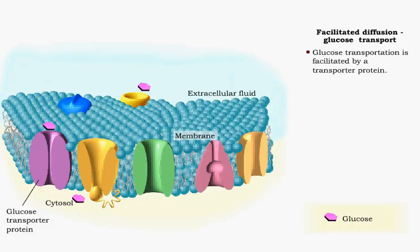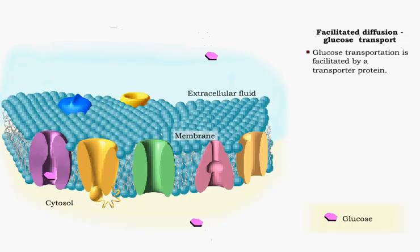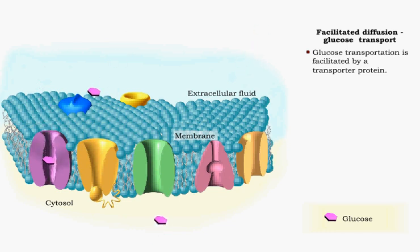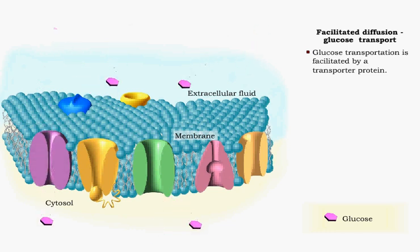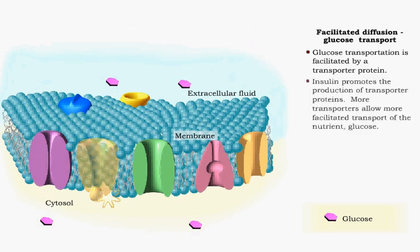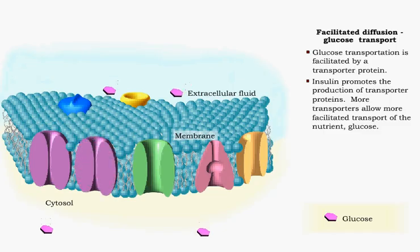Facilitated diffusion uses proteins that change shape to facilitate the transport of the molecule. One of the roles of the hormone insulin is to promote production of transporter proteins.